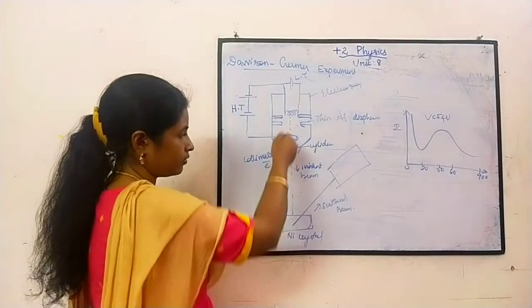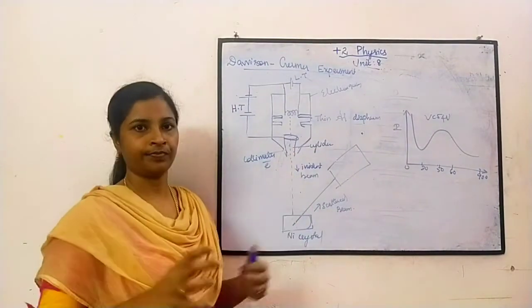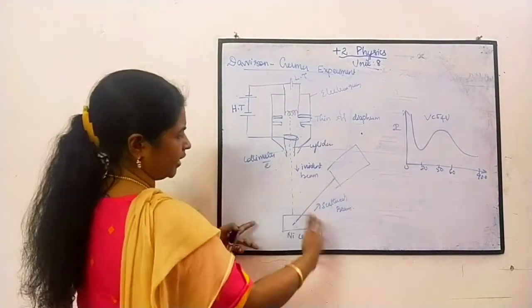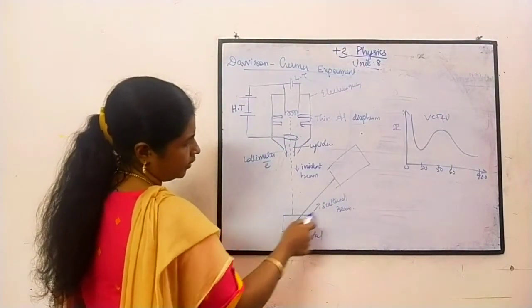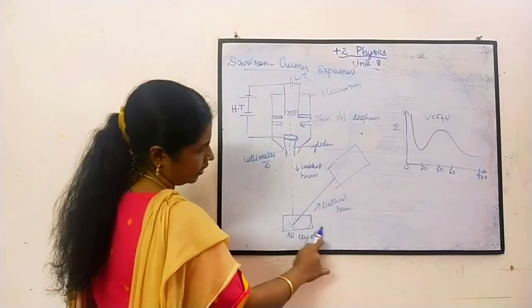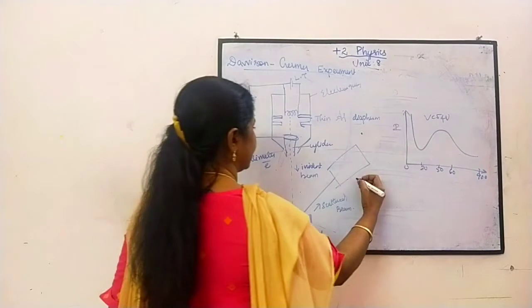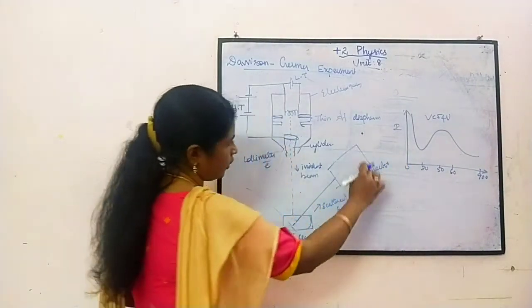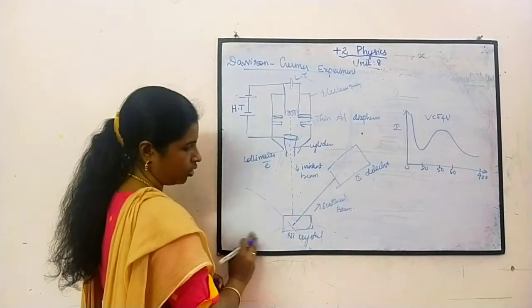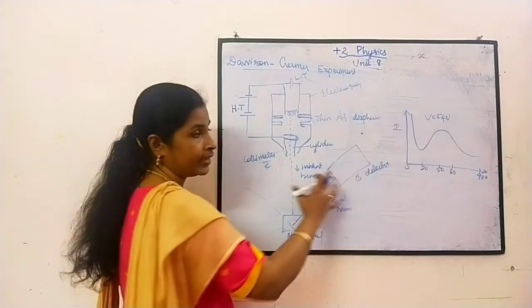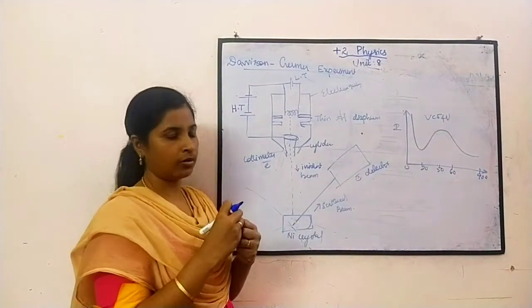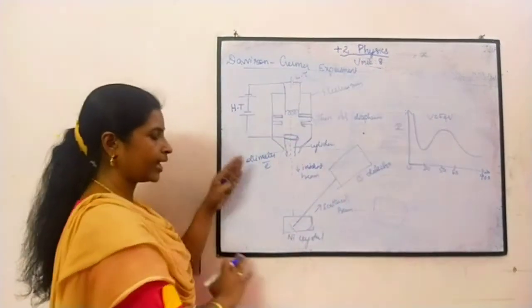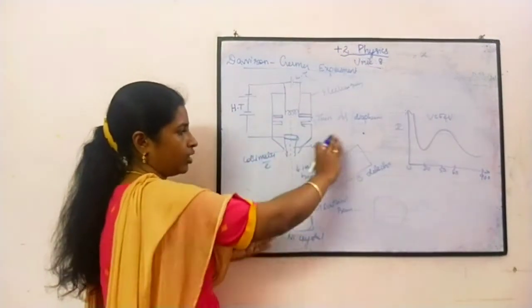When you hit this metal surface, the electrons will scatter. This is an electron detector. What this detector does is it will rotate like this at a particular angle.